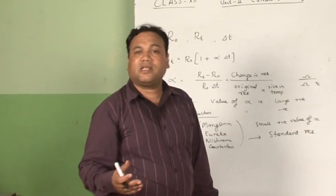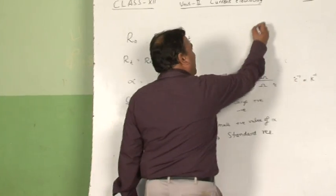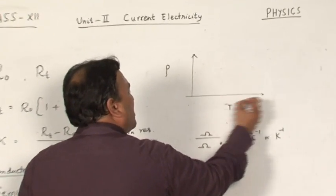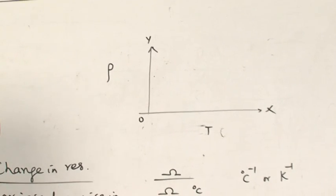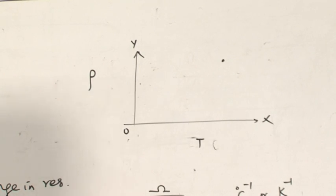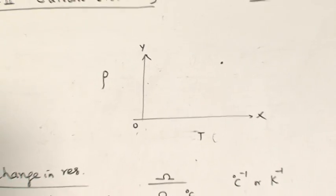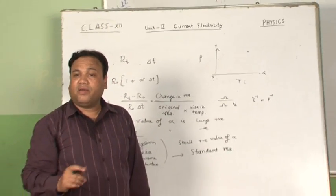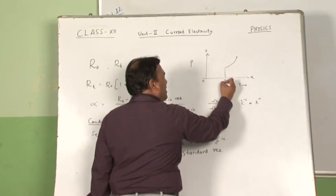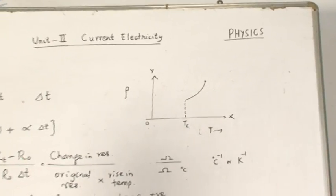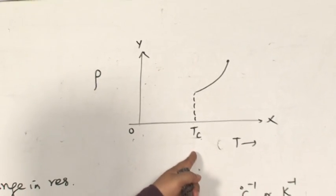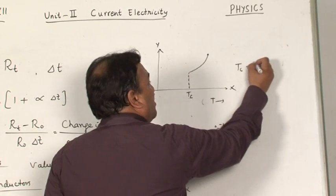Now, how does resistivity change with temperature? On a graph with resistivity on the y-axis and temperature on the x-axis: at high temperature some materials have certain resistivity, and as temperature increases, resistivity also increases. If we decrease the temperature, resistivity decreases. But at one particular temperature, suddenly both resistivity and resistance become zero — meaning those materials offer no opposition to the flow of charges. This temperature is called Tc, the transition or critical temperature.